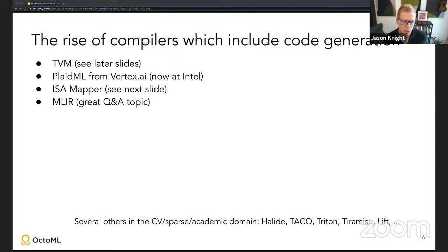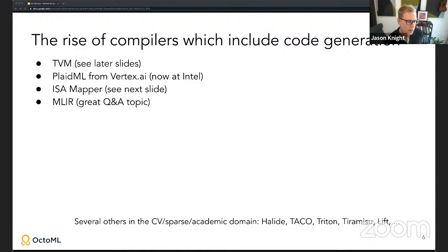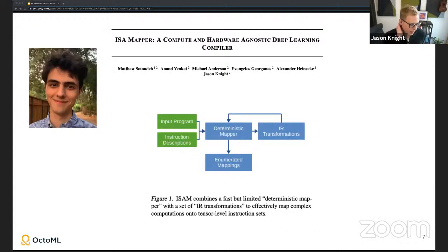Fortunately, in the 2017–2018 timeframe we saw the rise of compilers that handled not only high-level optimizations but also focused on code generation. I'll walk through two of these: TVM and something called Isomapper. PlaidML was an early one from a startup acquired by Intel; MLIR is another approach from Google now merging with XLA. There's also a lot of deep literature in adjacent academic efforts.